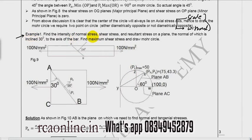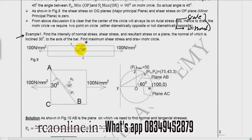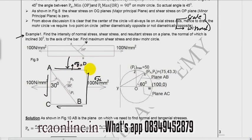Let us start with the first question. Find the intensity of normal stress, shear stress, and resultant stress on a plane the normal of which is inclined 30 degrees to the axis of the bar. Also find maximum shear stress and draw the Mohr's circle. A bar is given with the axial force of 100 Newton per mm square. So sigma x is 100, sigma y is 0, and shear stress q is 0.